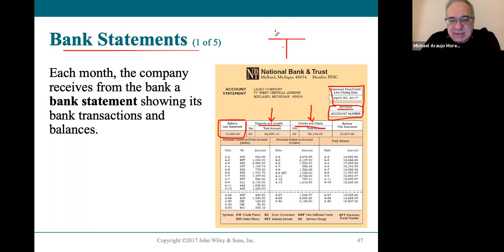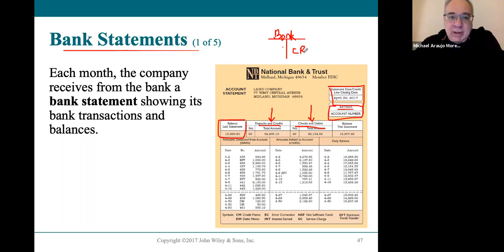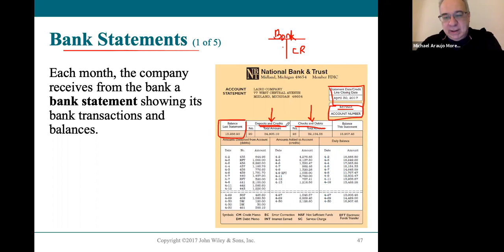From the bank's perspective, all your deposits are liabilities — it's your money, so it's your asset, and the bank owes it back to you with interest. That's why your checking and savings accounts are bank liabilities. Every time you put money in, they credit your account because their liability is going up. Every time money comes out, their liability goes down — which is why you have a debit card: when you use it, the bank lowers its liability to you.